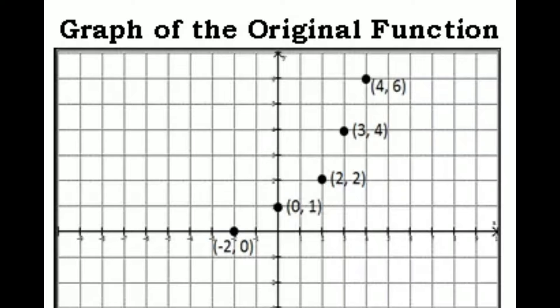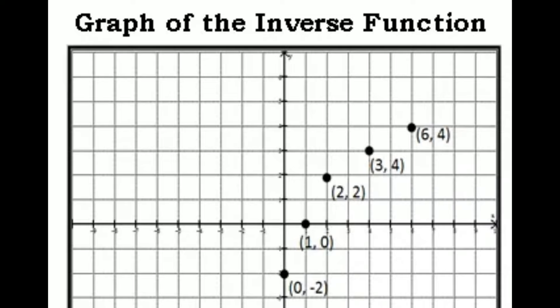Next, we'll show the graph of the inverse of this original function, where we just interchange the x and y coordinates. Here is the graph of the inverse of the original function, where we interchange the x and y coordinates. The points become (6,4), (4,3), (2,2), (1,0), and (-2,0).